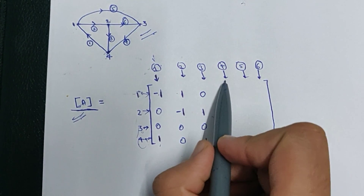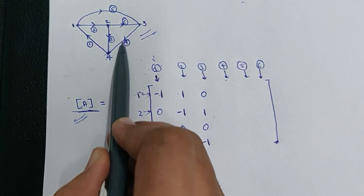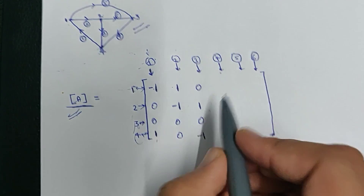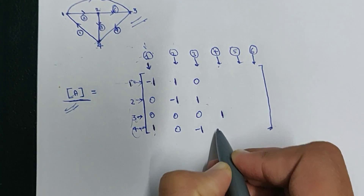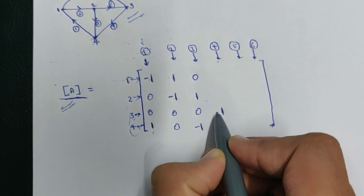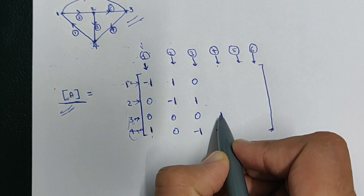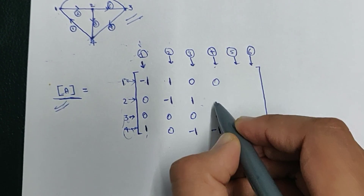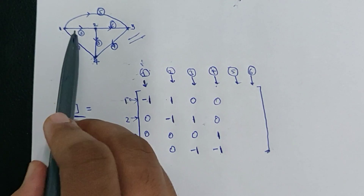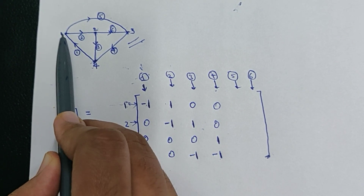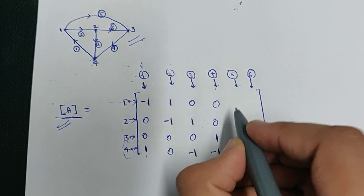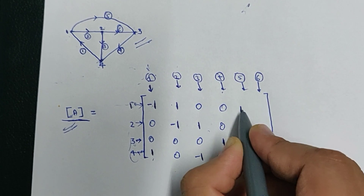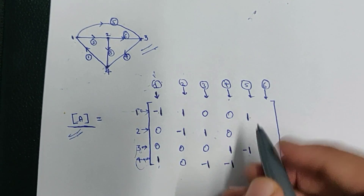Now consider branch four. The current is flowing from node 3 to node 4. From where it is starting is +1, and where it is ending is -1, and all other points are zero. Similarly, consider branch five — it is flowing from node 1 to node 3. It is ending at node 3 and starting at node 1, so +1 at node 1 and -1 at node 3, and all others are zero.